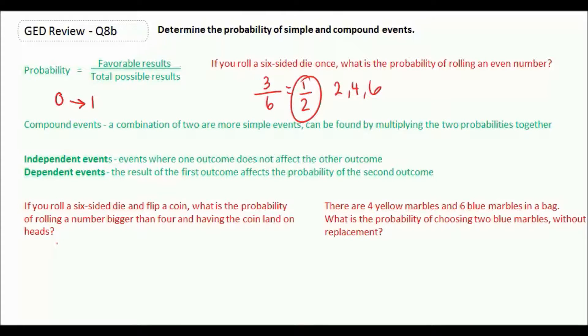So for the die, we want a number bigger than four. Once again, for our die, we have six total possible results. And if we want a number bigger than four, our options would be five or six, which means there's two favorable results. For our coin, if we want it to land on heads, well, there's only two possible options, heads or tails, and heads would only be one favorable outcome.